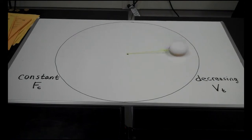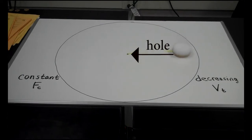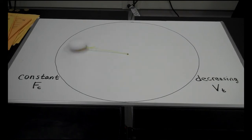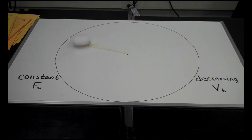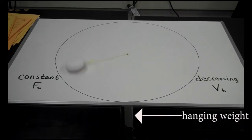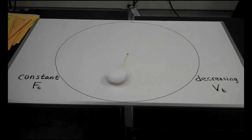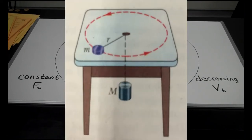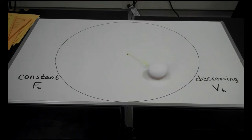Here's our setup. We have this whiteboard with a hole cut in the center, and I've dropped a string through it. On the end of the string is a rubber band connected to a puck made out of dry ice — a round cylindrical hockey puck-sized piece. The dry ice slides very well on the whiteboard. A weight attached to the other end of the string pulls downward underneath the table, producing tension, and then I spin the puck around the table with my hand.